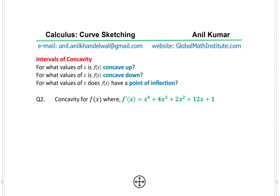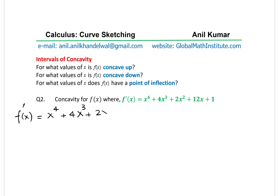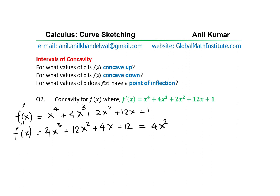For question two, we are given the first derivative f'(x) = x⁴ + 4x³ + 2x² + 12x + 1. For concavity, we find the second derivative directly: f''(x) = 4x³ + 12x² + 4x + 12. Now let's factor this by grouping — taking 4x² common from the first two terms gives (x + 3), and taking 4 common from the last two terms also gives (x + 3).